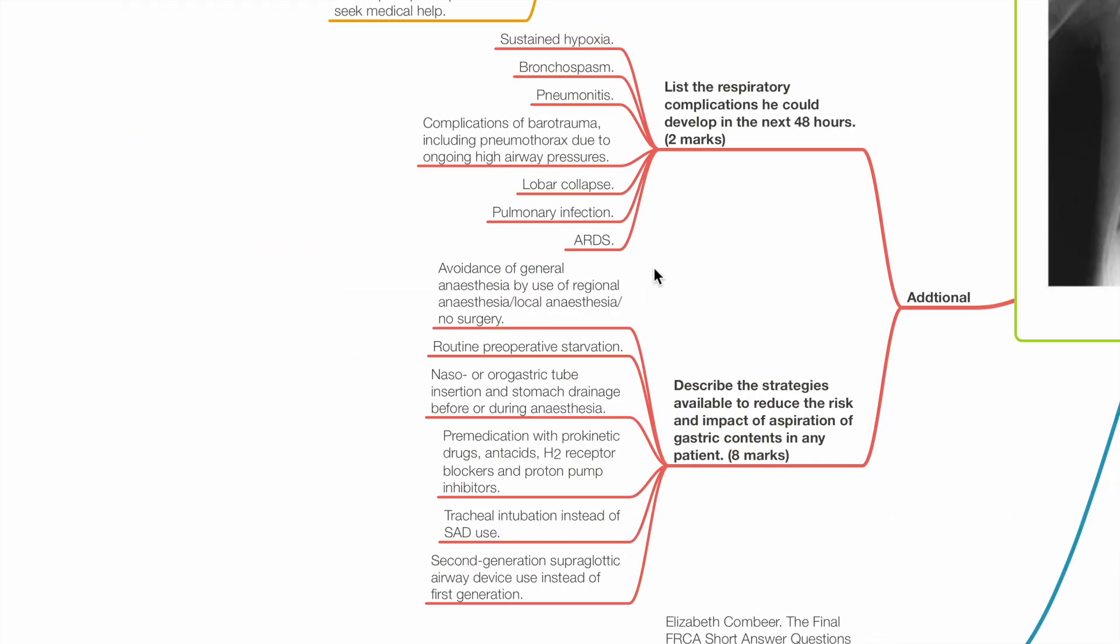Additional questions: List the respiratory complications that the patient could develop in the next 48 hours. These include sustained hypoxia, bronchospasm, pneumonitis, complications of barotrauma such as pneumothorax due to high airway pressures, lobar collapse, pulmonary infection and ARDS.